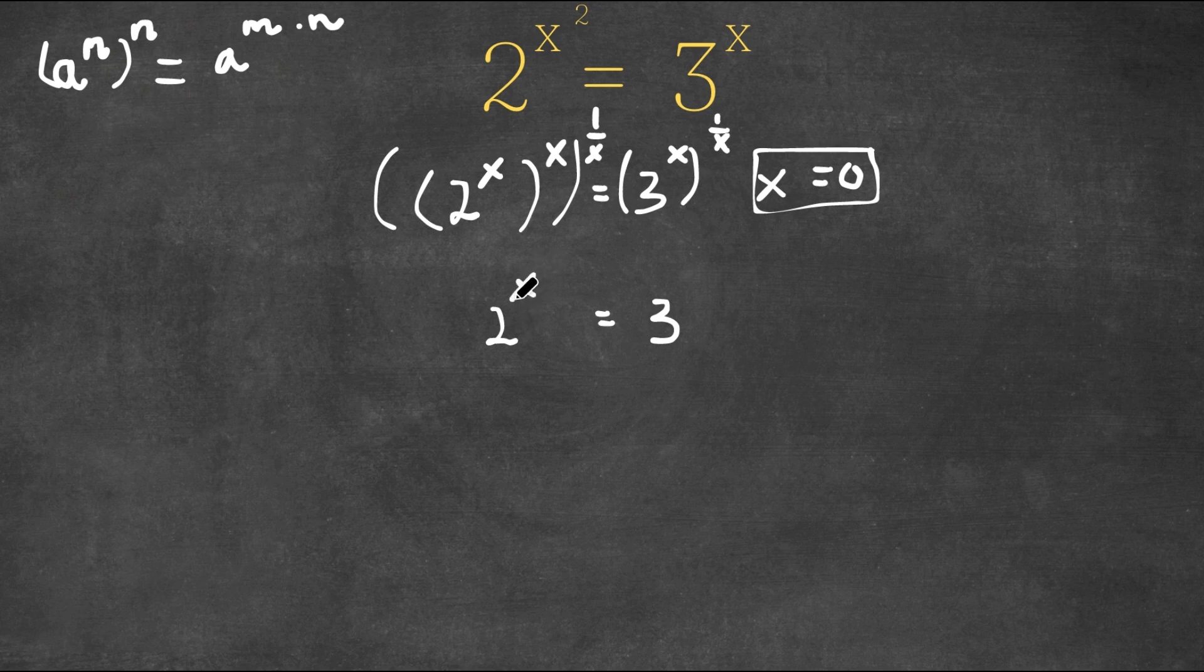So now we have 2 to the power of x is equal to 3. Now I'm going to take the natural log on both sides.